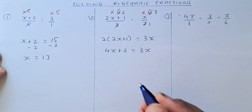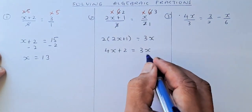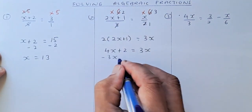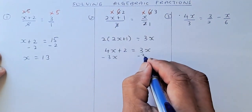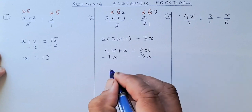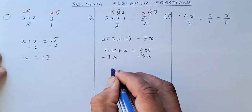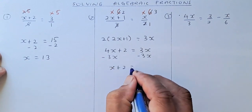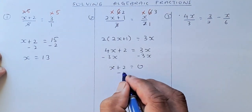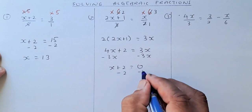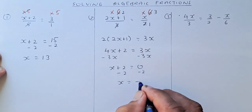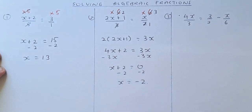Next step, get rid of the 3x by subtracting 3x on both sides. What's left is x plus 2 equals to 0. Then minus 2 on both sides, so x is equal to negative 2.